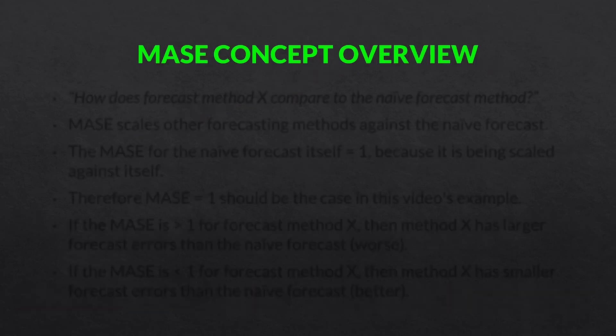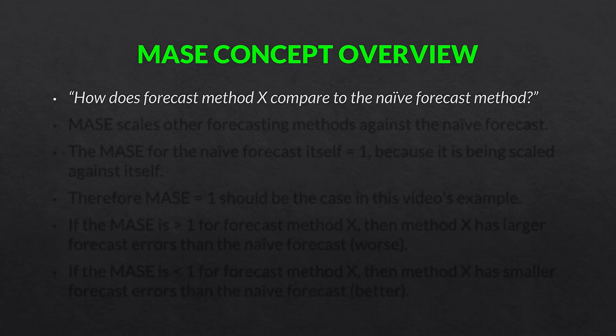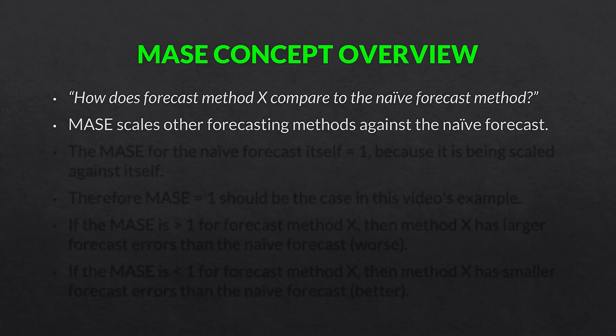Now onto the main concept of this video: MASE, or mean absolute scaled error. What MASE is asking is: how does forecast method X compare to the naive forecast method? That is the foundational question of MASE. MASE scales other forecasting methods against the naive forecast, using the naive forecast as a benchmark.